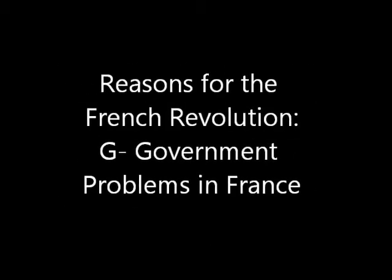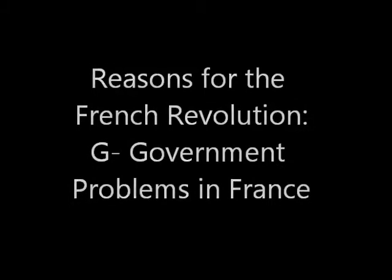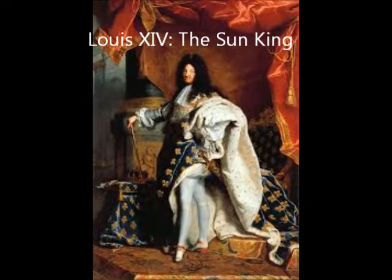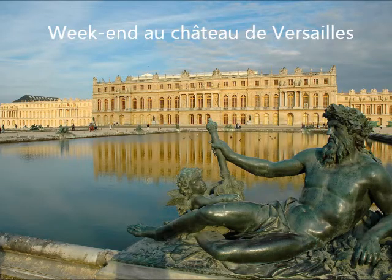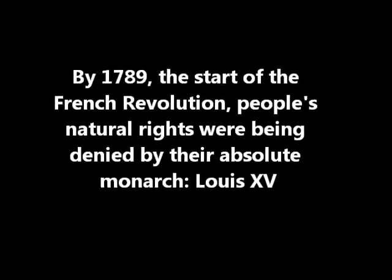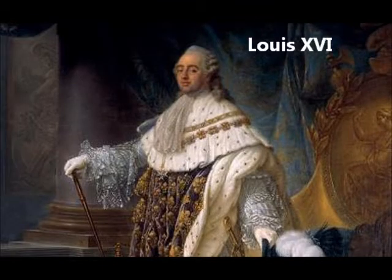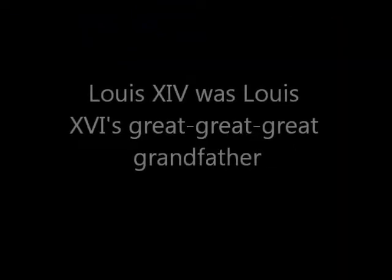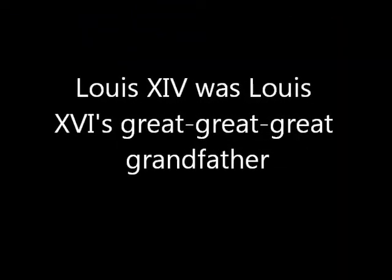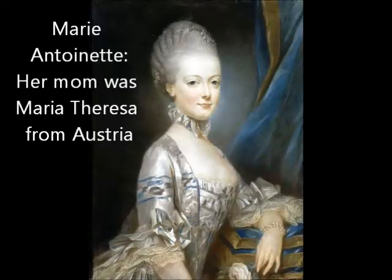There were many reasons for the French Revolution, so let's look at these using GENOS. G — government problems in France. They had an absolute monarch for a long time. By 1789, the people in France had had it with absolute monarchy. Under absolute monarchs, people's natural rights were being denied and they felt they had no say in government. The king in power in 1789 was Louis XVI, whose wife was Marie Antoinette. People were really dissatisfied with their government.